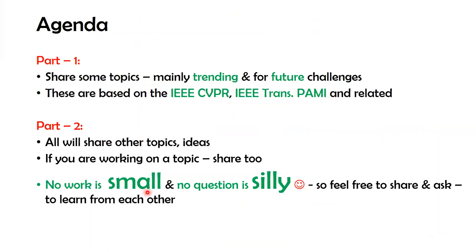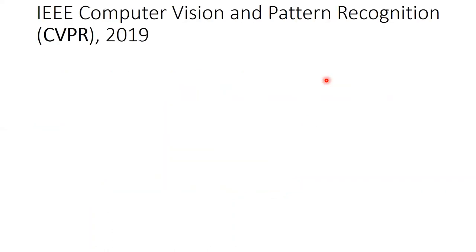No work is small and no question is silly. Don't feel shy to ask any questions or share what you're doing. The top conference in computer vision and pattern recognition is called CVPR. The main conference accepts about 1,400 papers from 6,000 plus submissions, and all papers are full papers — eight to ten pages, double columns, equivalent to about 20 pages single column.